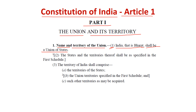Clause 2 says the states and the territory thereof shall be specified in the First Schedule. So what is the state and territory which is actually specified in the First Schedule? Whenever we say there are states and territory, the states we are talking about include Madhya Pradesh, Uttar Pradesh, Uttarakhand — we are talking about the whole of India.